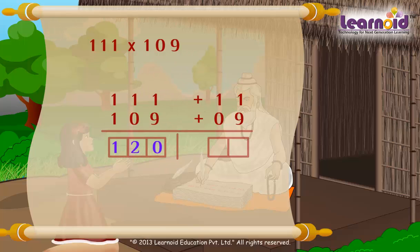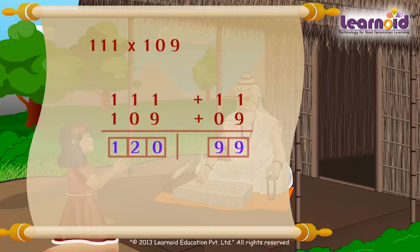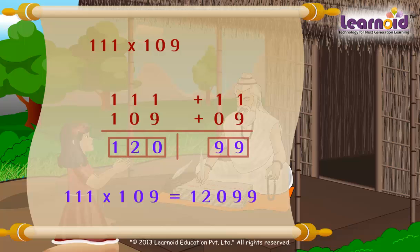To find the right digit, multiply vertically: 11 into 9 equals 99. So 111 into 109 equals 12099.